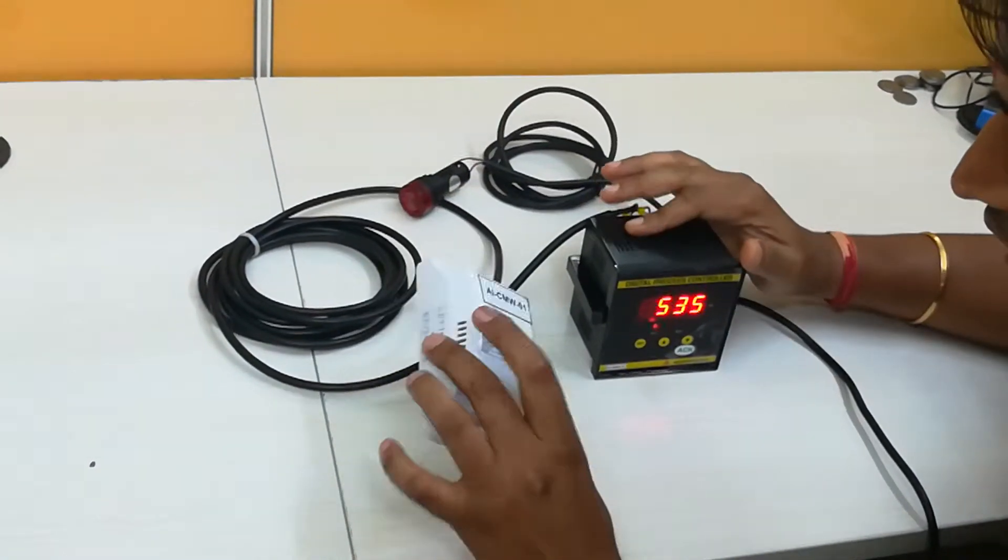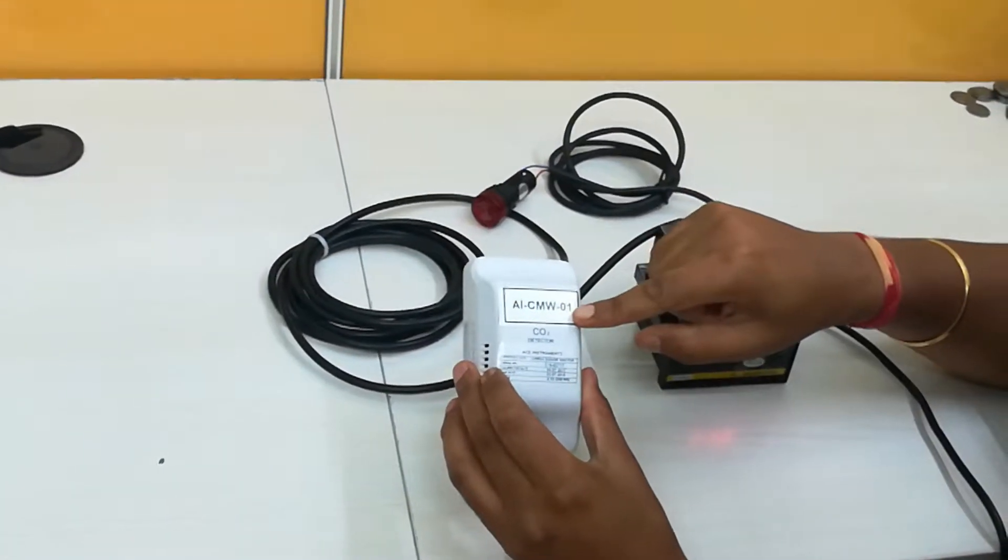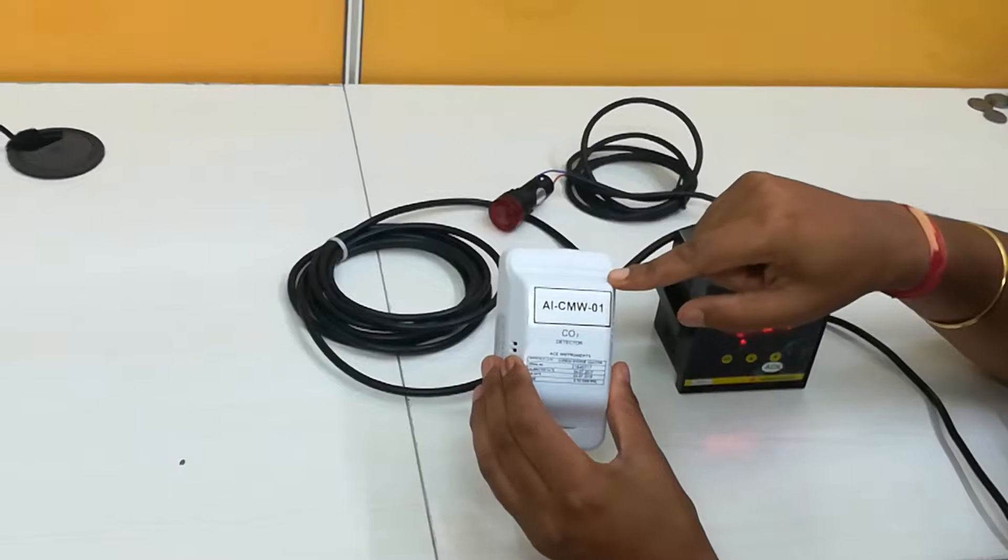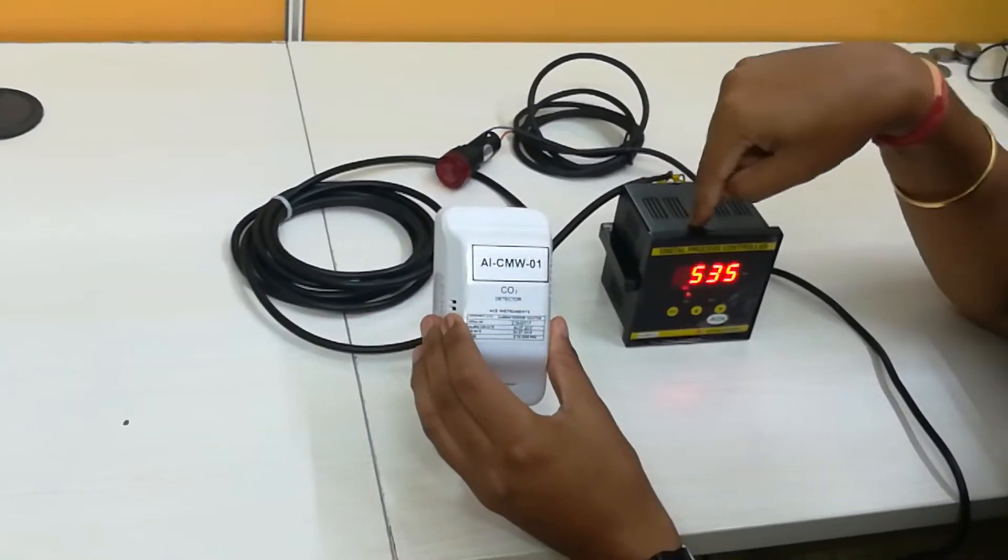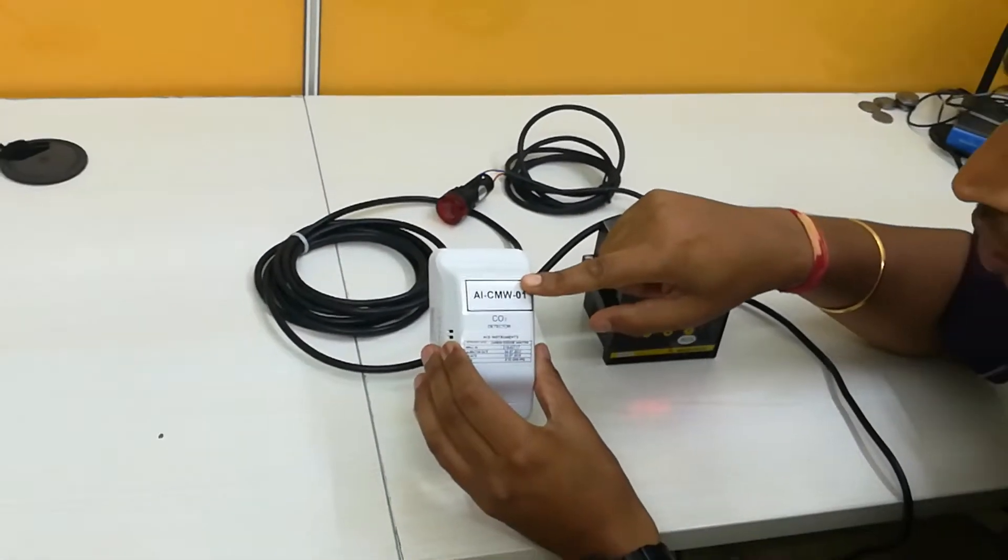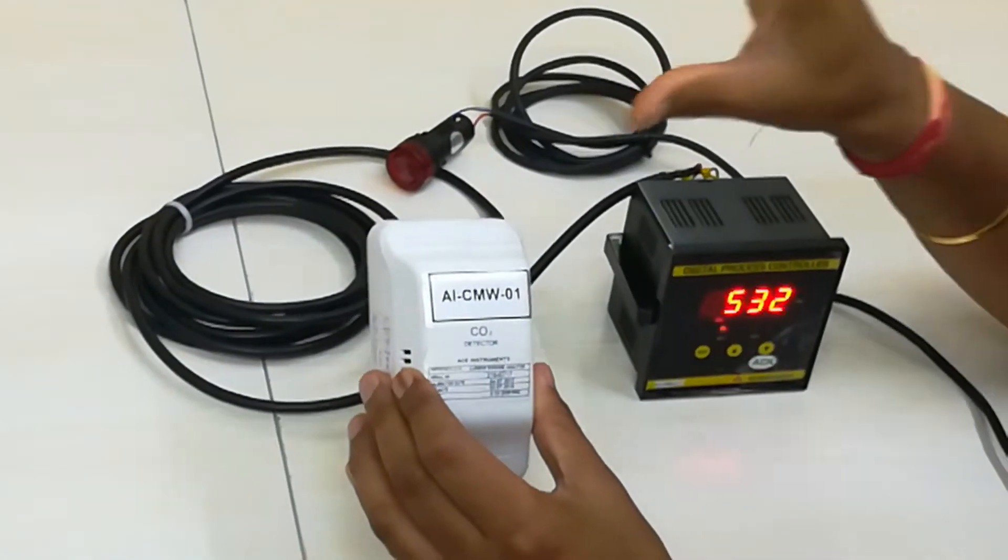The first instrument we are seeing is a carbon dioxide detector. This has got a 4 to 20 milliamps output which can give output to this controller. This has got a display option also which can be mounted directly to the wall for indication purposes.